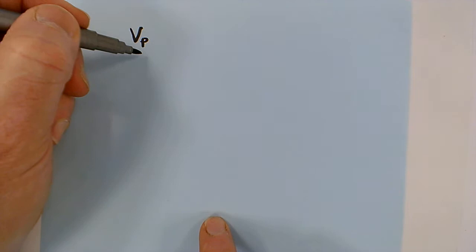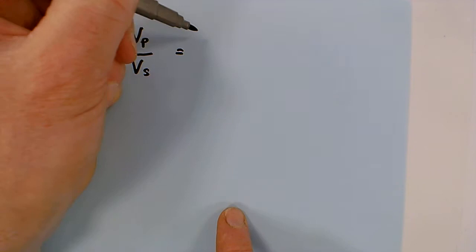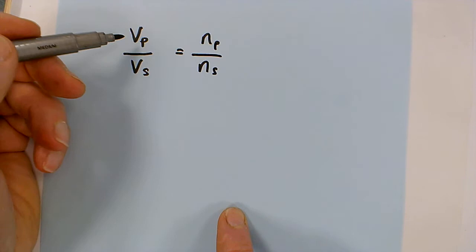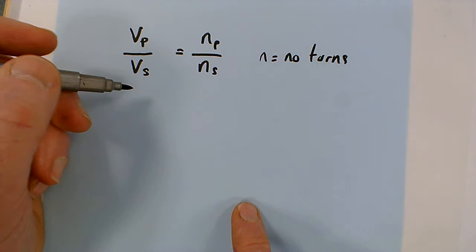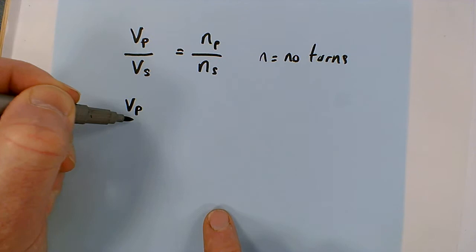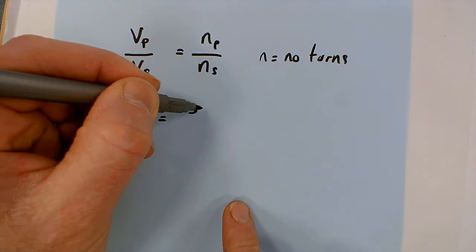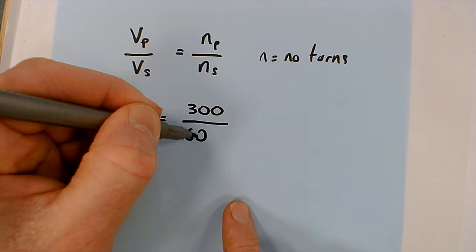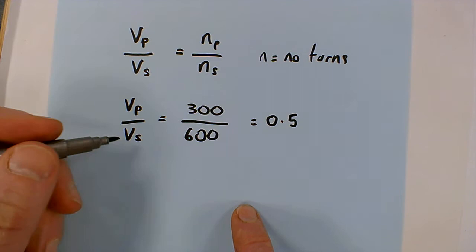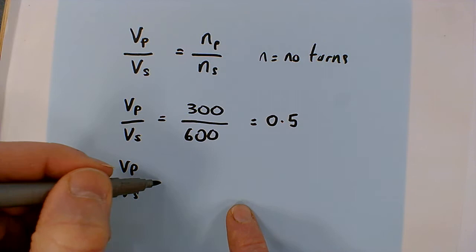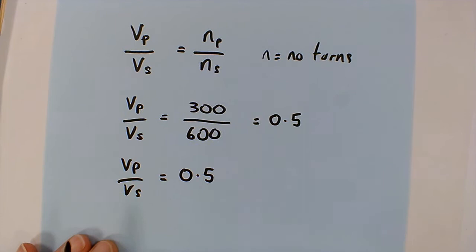The equation in shorthand is VP, that's the potential difference across the primary, divided by VS the secondary equals NP primary over NS secondary. Now V is the potential difference, N is the number of turns. So what we know is the number of turns on the primary and secondary because I showed you. So we know that VP divided by VS equals 300 on the primary turns and 600 on the secondary. Now even I can do that: 300 divided by 600 is 0.5.